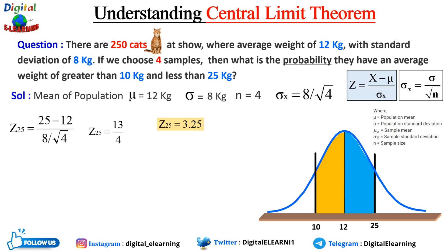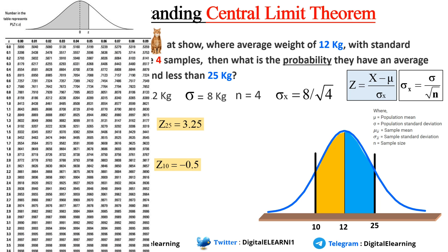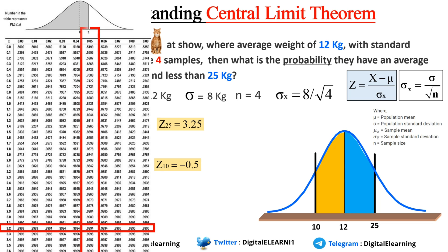For z at 25: we calculate (25 minus 12) divided by (8 divided by root 4), giving 13 divided by 4, so z equals 3.25. For z at the lower limit of 10: (10 minus 12) divided by (8 divided by root 4) gives z equals minus 0.5. Looking up z equals 3.25 in the z-table — finding 3.2 in the horizontal column and 0.05 in the vertical column — at the intersection we get 0.9944. Since the area under the curve is 1 and half is 0.5, we subtract to get 0.4944.